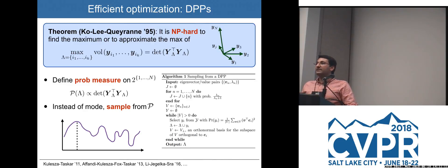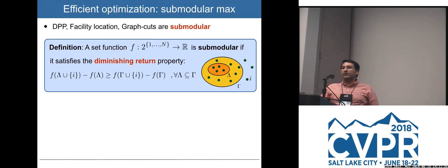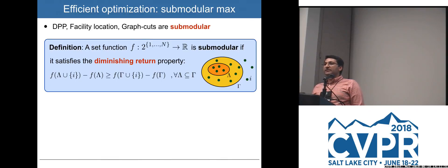Sampling from DPPs can be done efficiently in polynomial time by taking the eigenvalue decomposition of the kernel matrix Y^T Y. On the other hand, many criteria for subset selection — including the logarithm of DPPs, graph cuts, maximum marginal relevance, and facility location — all fall into the class of submodular functions.